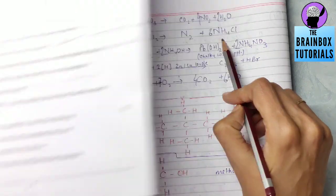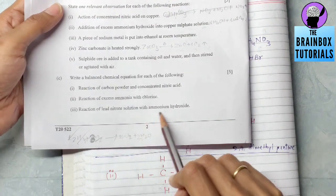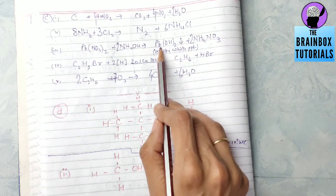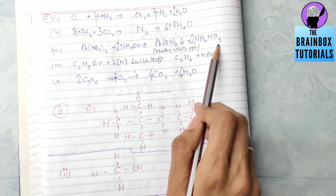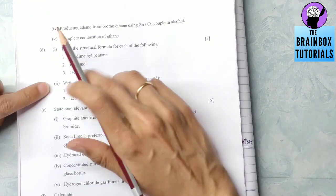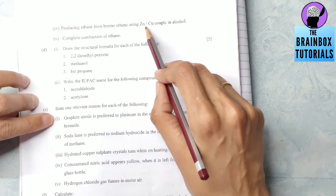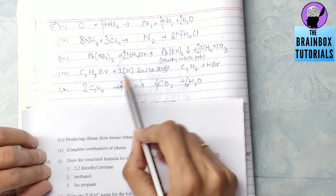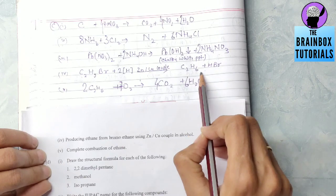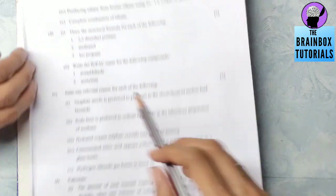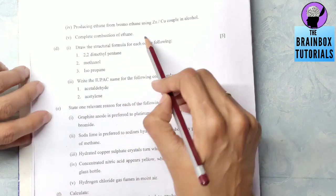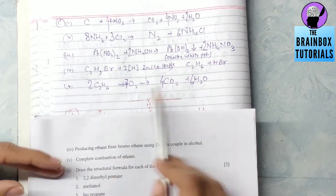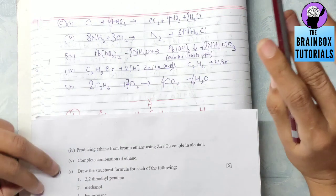Number three: reaction of lead nitrate solution with ammonium hydroxide. Lead nitrate with ammonium hydroxide will make chalky white precipitate of lead hydroxide and NH4NO3, that is ammonium nitrate. Fourth one: producing ethane from bromoethane using zinc or copper couple in alcohol. Here is the answer: C2H6 plus HBr hydrogen bromide is formed. Number five: complete combustion of ethane. Complete combustion of any fuel when it is burnt releases carbon dioxide and water vapors, so do that and balance the equation.